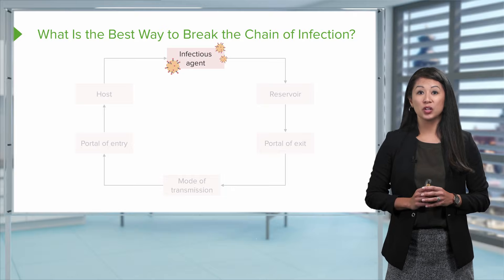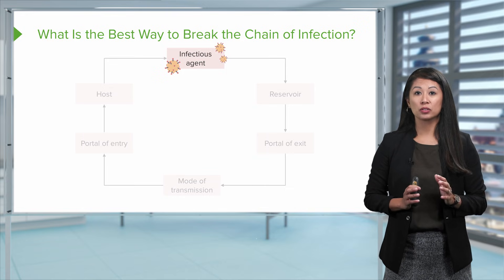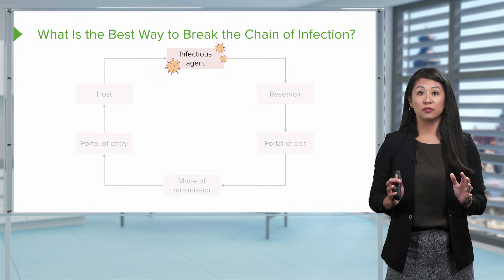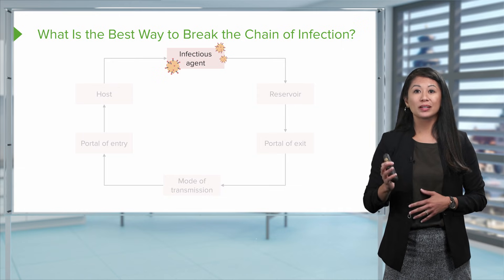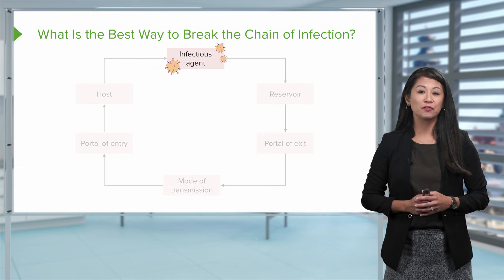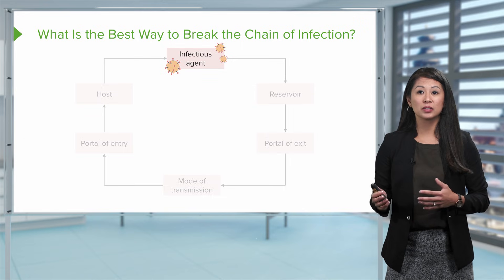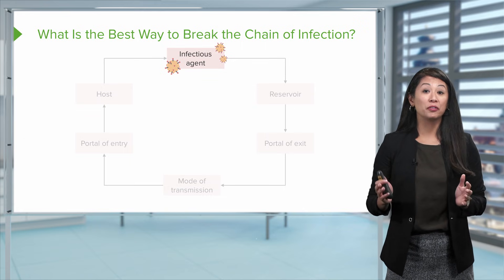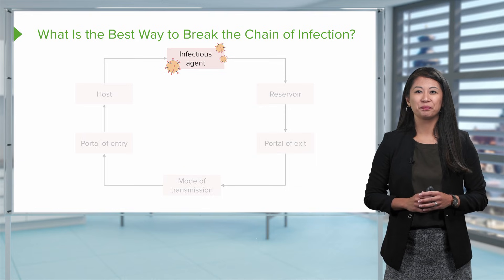Let's look at how infection occurs by looking at the chain of infection. The first thing we're going to look at is the infectious agent we talked about, such as bacteria or a virus. Let's use the example of a flu virus — I think we're all pretty familiar with that one.